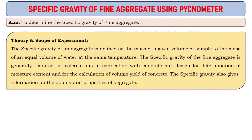Specific gravity of an aggregate is defined as the mass of a given volume of sample to the mass of an equal volume of water at the same temperature.